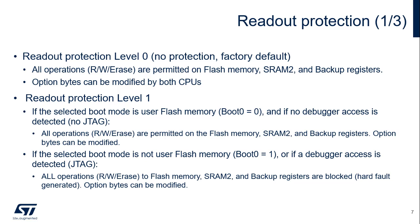Level 1 ensures total read protection of the chip's memories, which includes the Flash memory and the backup registers, as well as a new feature to the STM32 family — the SRAM2 content. Whenever a debugger access is detected or boot mode is not set to a Flash memory area, any access to the Flash memory, the backup registers, or to the SRAM2 generates a system hard fault, which blocks all code execution until the next power-on reset. Note that the option bytes can still be modified in Level 1.